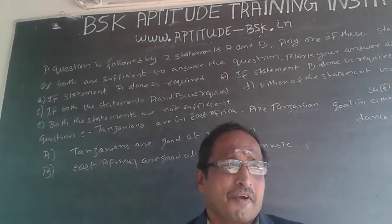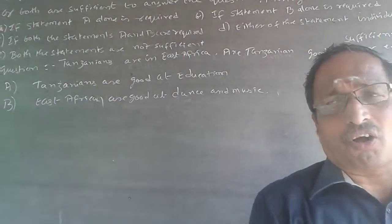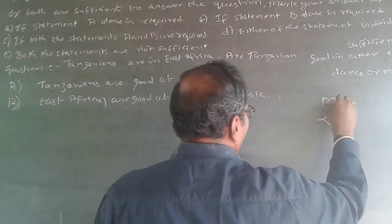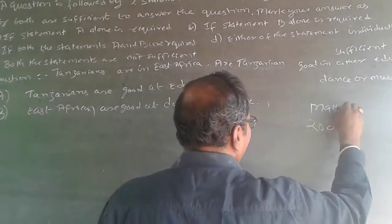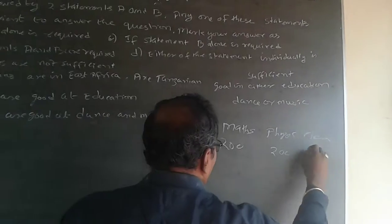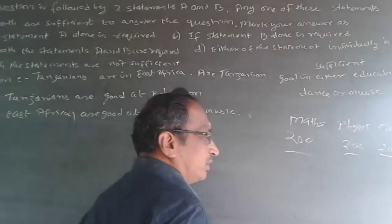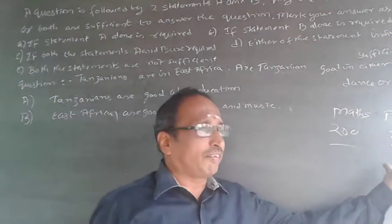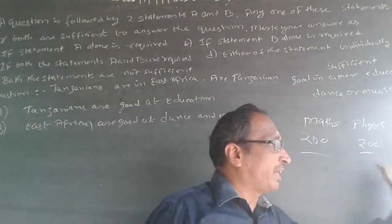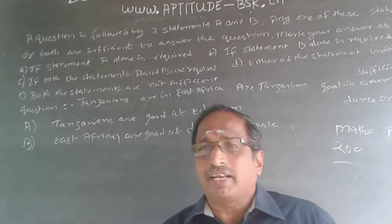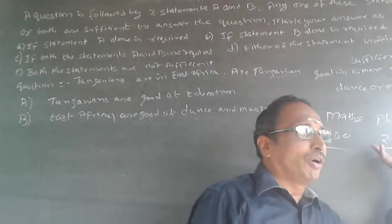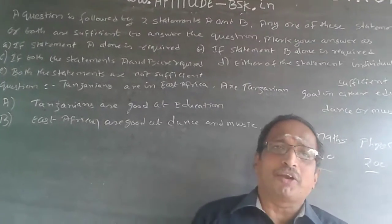Consider this analogy: suppose you are getting 200 out of 200 in physics, 200 out of 200 in math, and 200 out of 200 in chemistry. If you get full marks in all three subjects and I ask you — are you good in all three? — you will definitely say yes, you are good in all three.